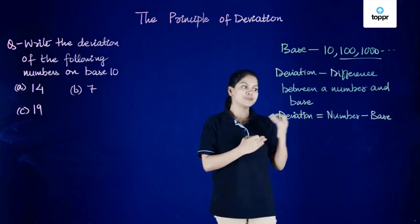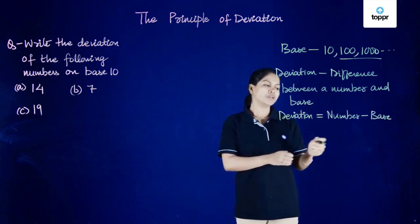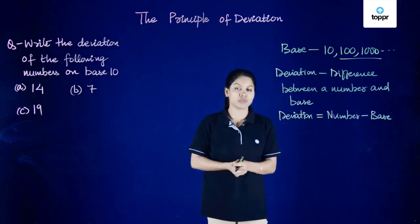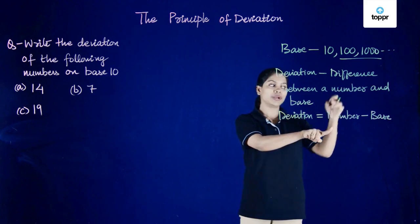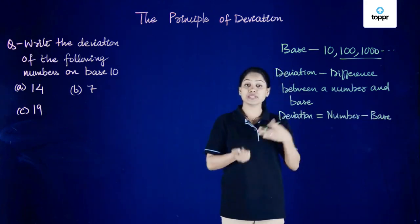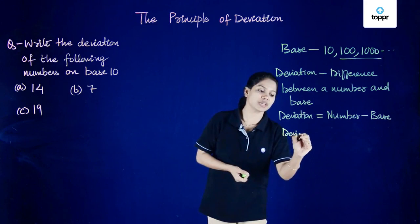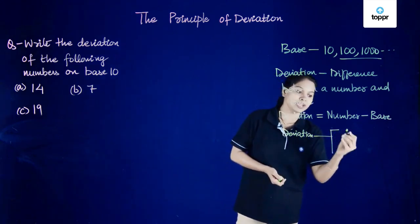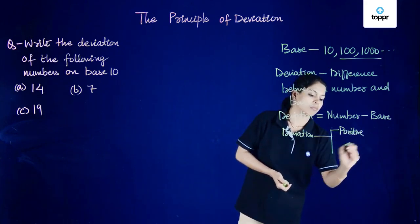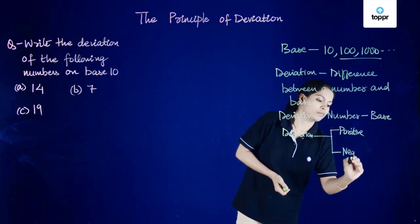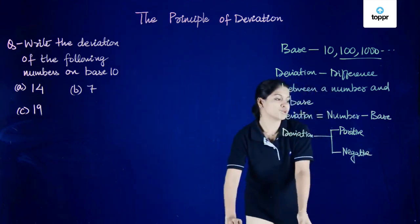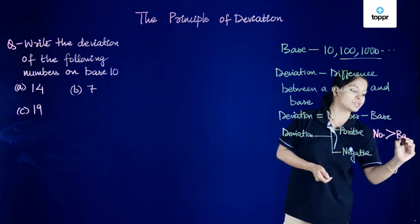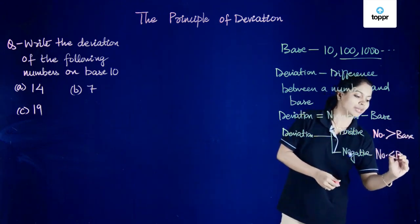Since it is the difference between two quantities, what if a number is bigger than the base? No problem, we'll be getting a positive result. But if the number is smaller and the base is bigger, then we'll be getting a negative result. That means deviation can be both negative and positive. When the number is bigger than the base it is positive, and it is negative when the number is smaller than the base.